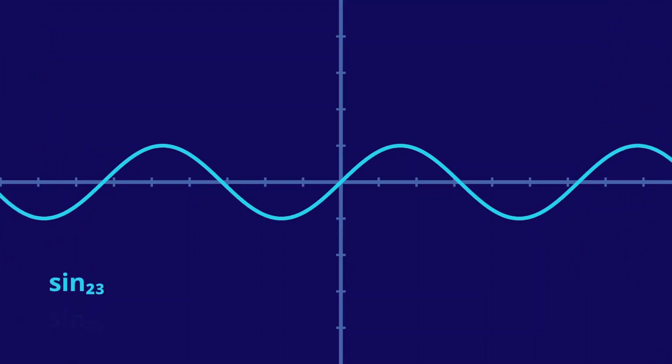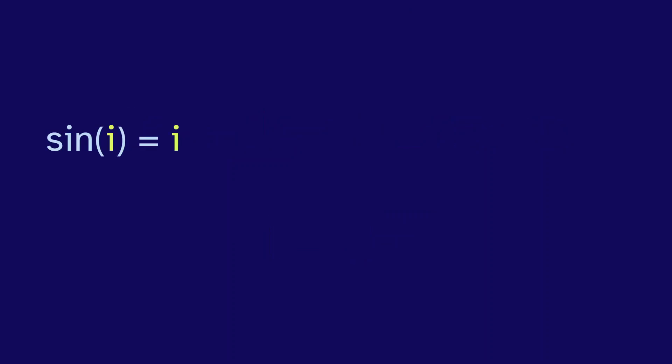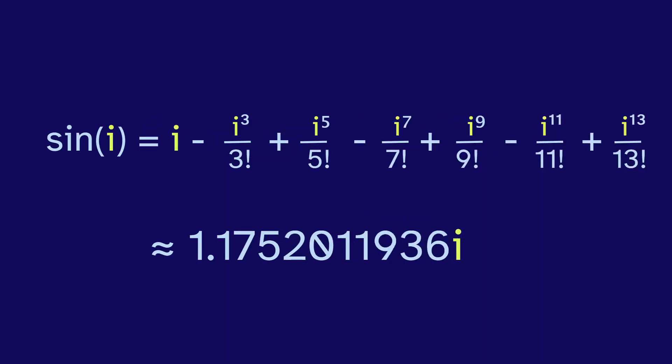We can also use the Maclaurin series with complex numbers. The sine of i is i minus i to the third over 3 factorial, and so on. It's about 1.1752i.